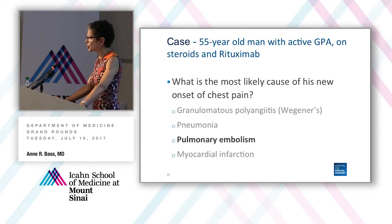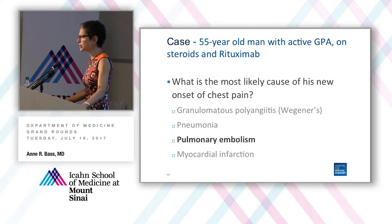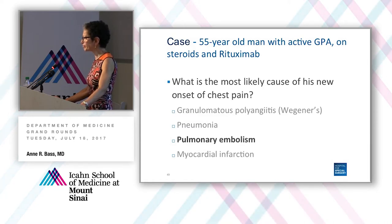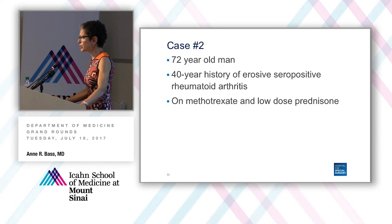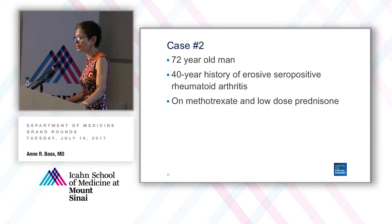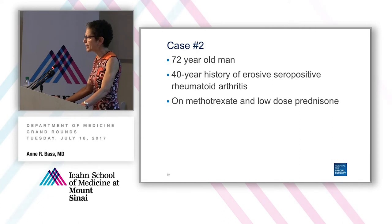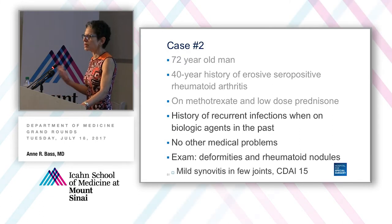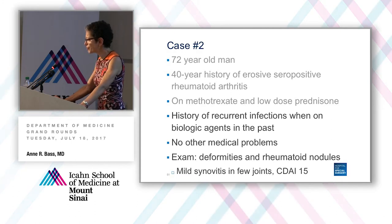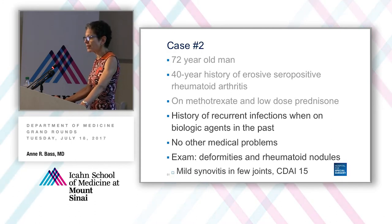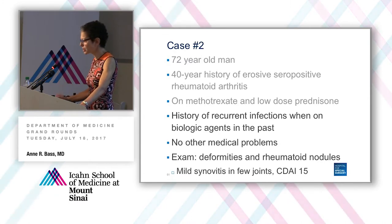So in our first case of the patient with GPA, I would argue that PE would be at the top of my list, although clearly these other conditions are in the differential. Moving to case two: this is a 72-year-old man with a 40-year history of erosive seropositive rheumatoid arthritis. He's on methotrexate and low-dose prednisone — he's not on more aggressive therapy because of a history of recurrent infections on biologic agents. He has no other medical problems. On exam he has joint deformities, rheumatoid nodules, mild synovitis in a few joints, and his CDAI is 15, indicating moderate disease activity — not well controlled.